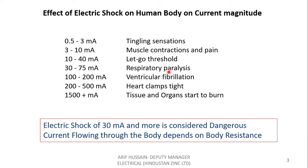At 30 to 75 milliamperes, this could lead to respiratory paralysis — this is dangerous. At 100 to 200 milliamperes, it will cause ventricular fibrillation, a condition when the heart starts beating abnormally and very fast, which could be fatal. At 220 to 500 milliamperes, the heart clamps very tight. And if the flow of current is more than 1500 milliamperes, the tissues and organs of the human body start to burn. As a standard, electric shock of 30 milliamperes or more is considered dangerous and fatal. The current that flows through the human body depends upon the resistance of the body.